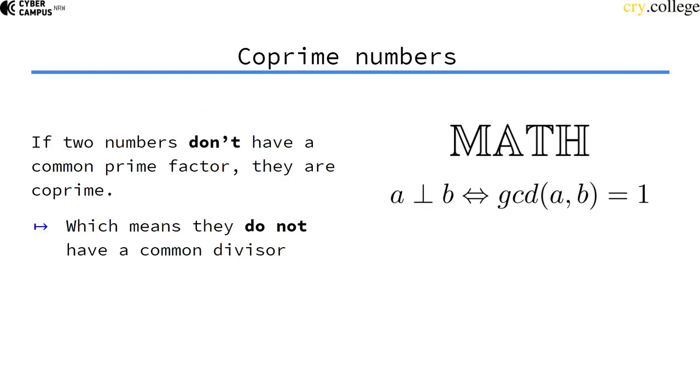If two numbers don't have a common prime factor, they're co-prime. As we saw in the last video, if the greatest common divisor of two numbers is 1, then they're co-prime, which means they do not share a prime factor.